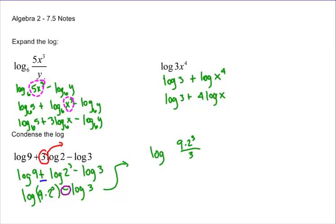We can do nine times two cubed over three. This is going to end up being log of nine times eight divided by three, which is log 24.